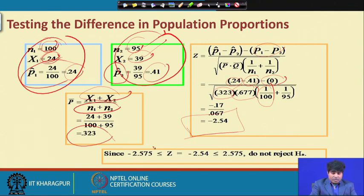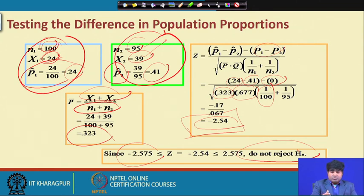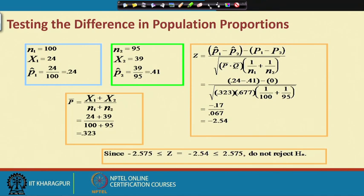The Z-critical value is minus 2.575, and the calculated value is minus 2.54, which is lesser in absolute terms. As a result, we are not in a position to reject the null hypothesis. This means there is equality between the two sample proportions: P1 equals P2. That is the inference we draw from this case.